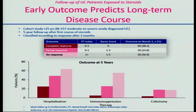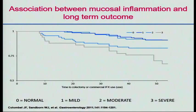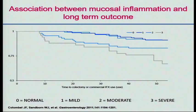Feeling well wasn't good enough. Looking at the ACT studies, endoscopic outcome is associated with an increased risk of needing biologics or a colectomy. Patients with an endoscopic Mayo score of 0 or 1 did very well, but those with a Mayo score of 2 or 3 after induction had a much higher chance of ending up with a colectomy.